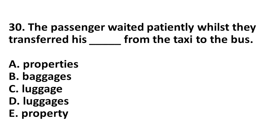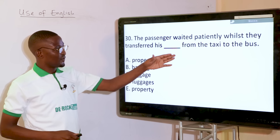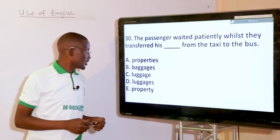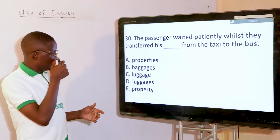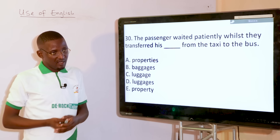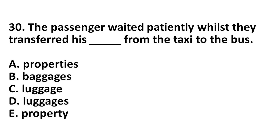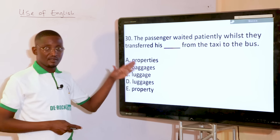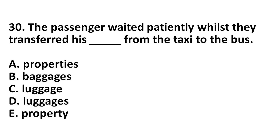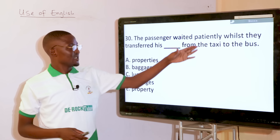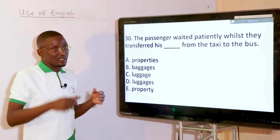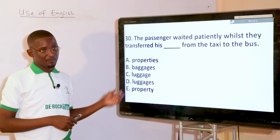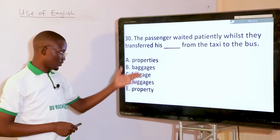The passenger waited patiently whilst they transferred his dash from the taxi to the bus. As we explained, words like baggage and luggage cannot be pluralized — baggages should be baggage, and luggages is ungrammatical. Luggage is already a plural word — it is singular in term but plural in meaning. The passenger waited patiently whilst they transferred his luggage from the taxi to the bus. The plural form is still luggage — you don't add S.